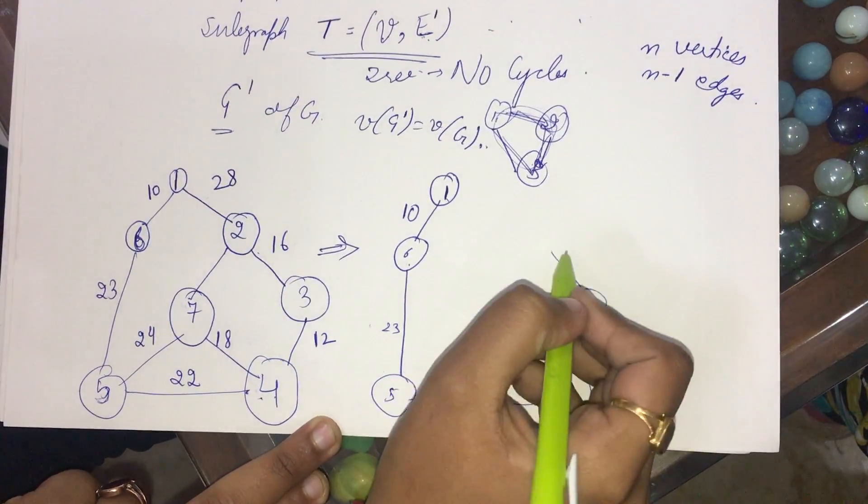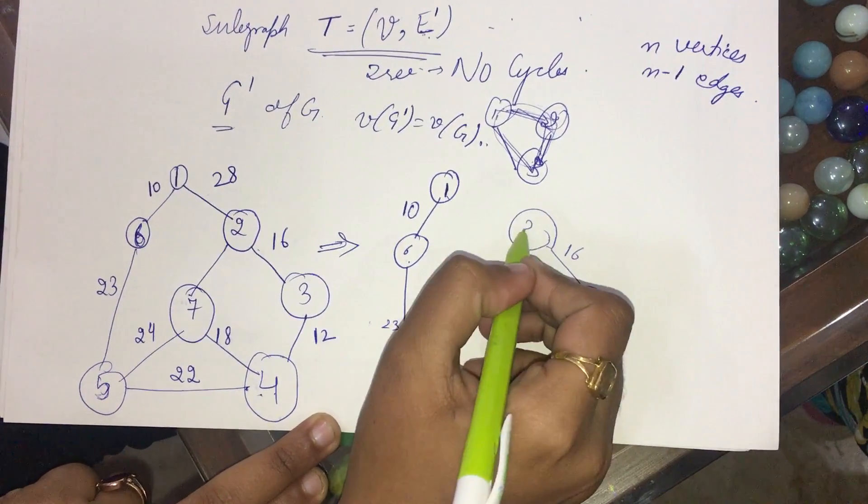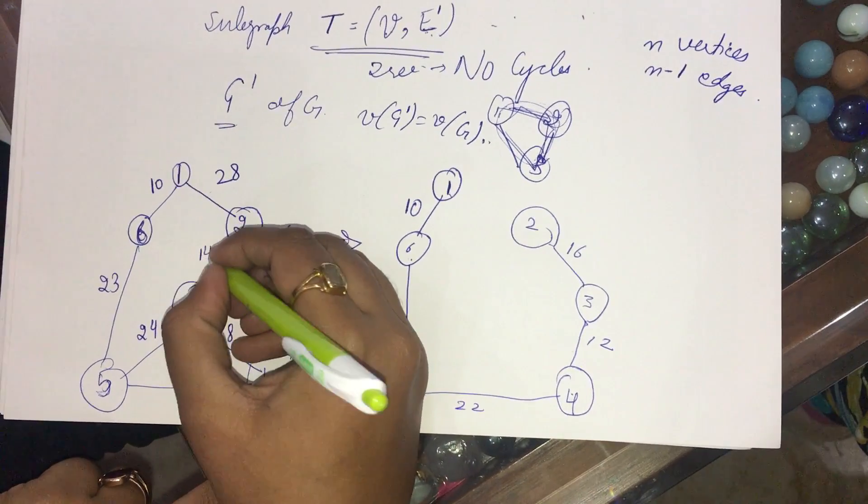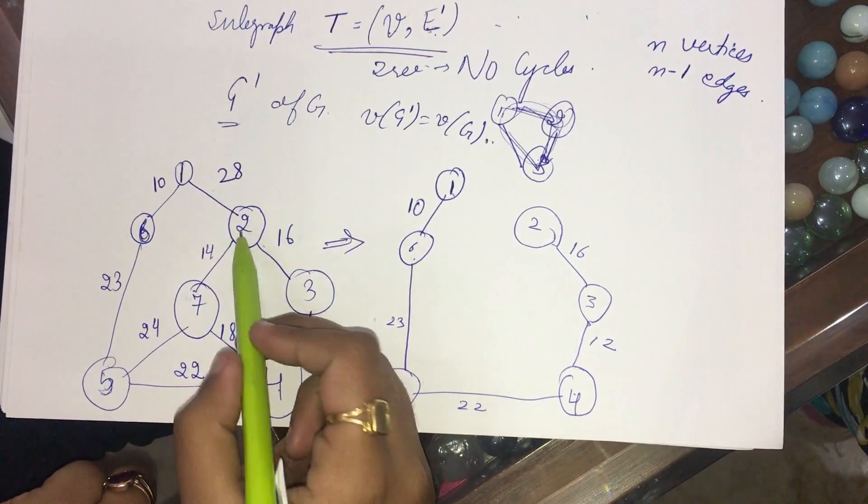3 obviously just goes to 16. I choose 16 and 2. 2 can go to 1 and 7. I forgot to write down the cost here. It is 14, suppose. Then 2 can go to 1 and 7.